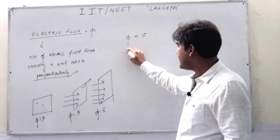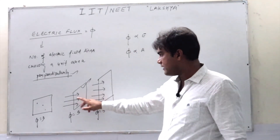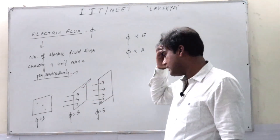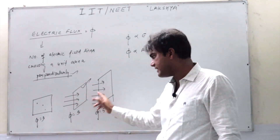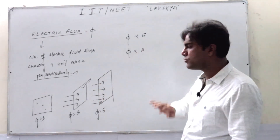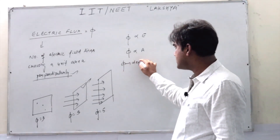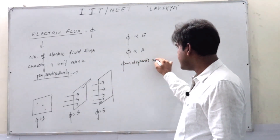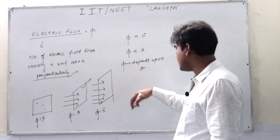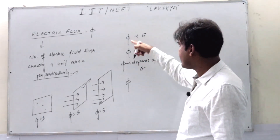Similarly, phi is also proportional to the area A. You see — the field lines are the same, but if we are increasing the area, because of the same electric field intensity, increasing the area will accommodate more number of lines. And phi also depends upon theta, because we need to always take only the perpendicular lines — not any other lines. So phi depends upon E, A, and theta.